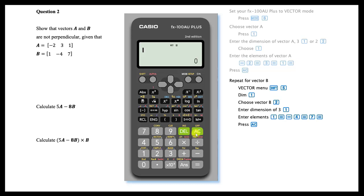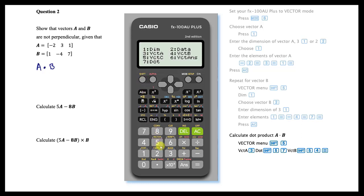To determine whether vectors A and B are perpendicular, their dot product can be calculated. To do so, use the vector menu accessed by pressing Shift and then 5. Enter vector A dot vector B and press equals.